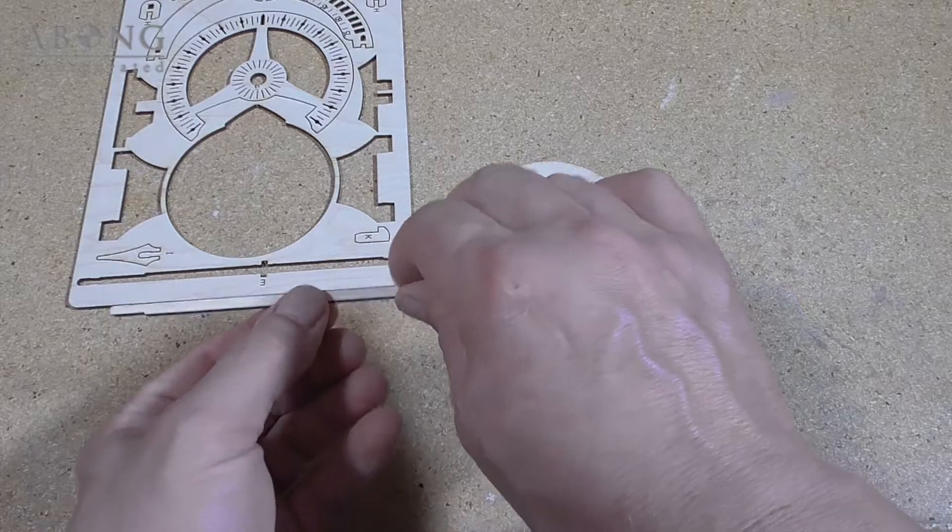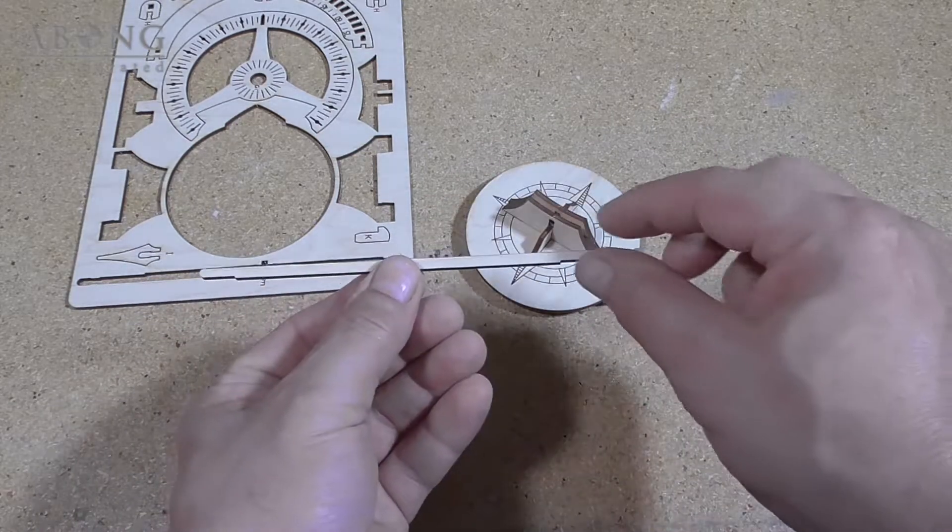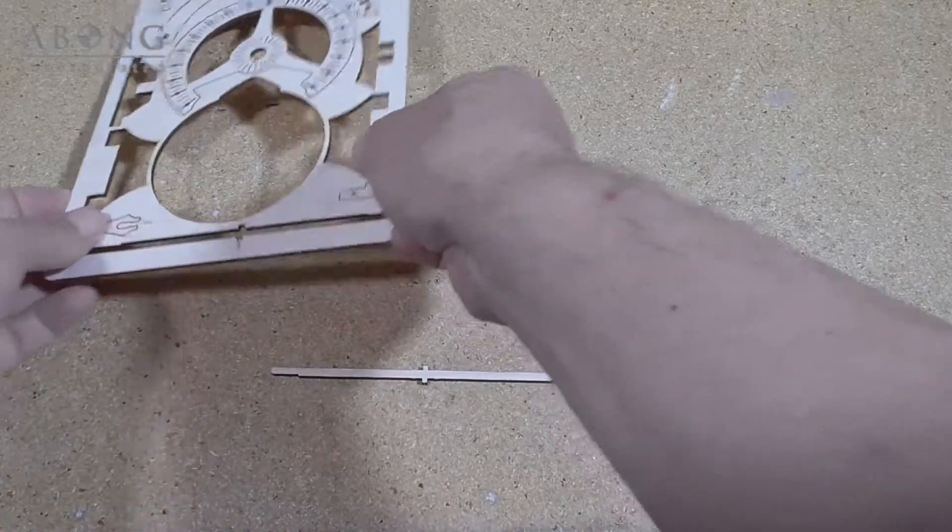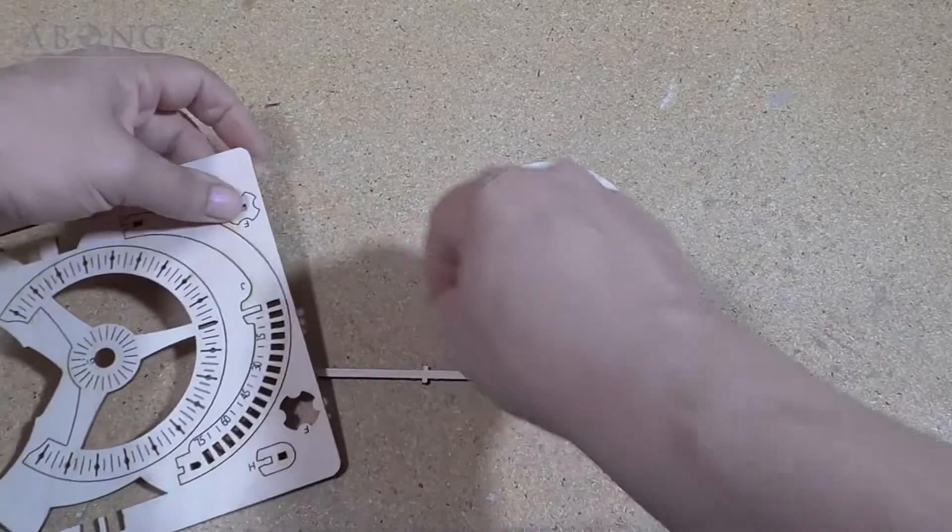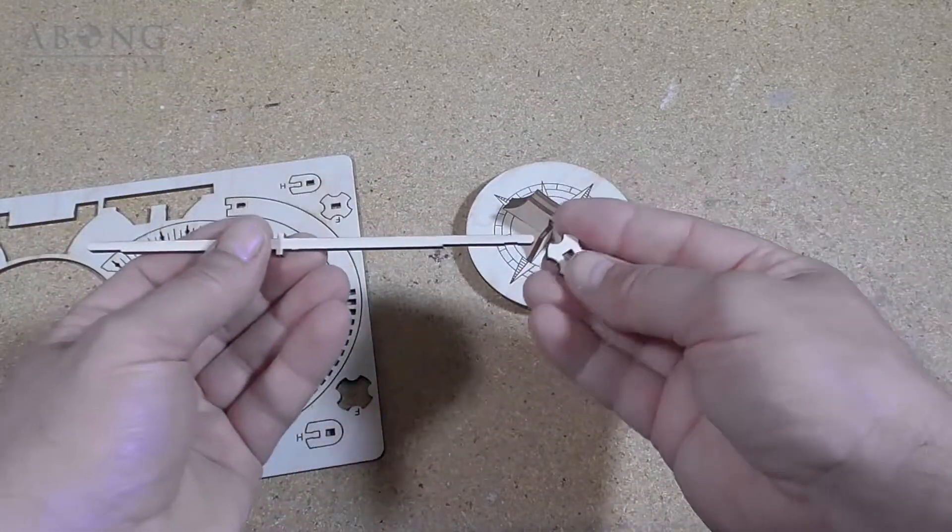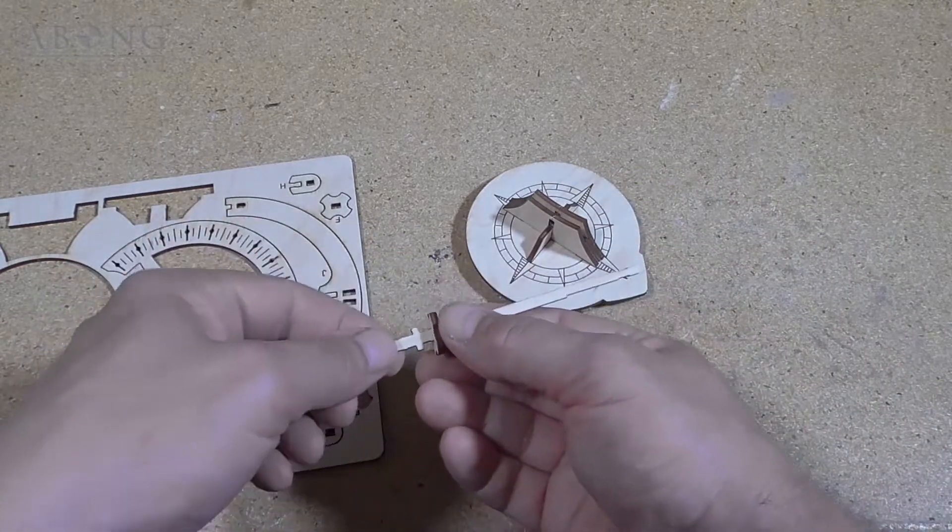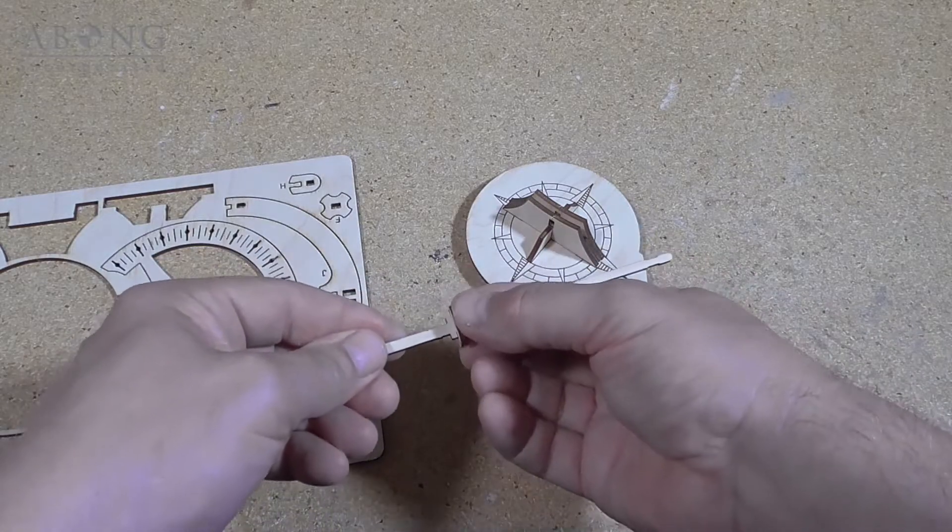And when looking at the gnomon, notice that the ends are slightly smaller and there's a notch. So we'll start by adding the dial. We're going to slide one of these parts on. It doesn't matter which way this part goes. And we're just going to press that right up against there.